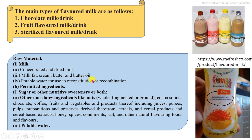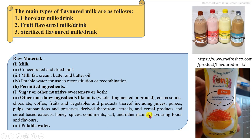The main ingredients used for the production of flavored milk include: first, milk — mostly toned milk, double toned milk, reconstituted milk, or recombined type milk prepared using milk constituents. Second, sugar and sweeteners as per regulations. Third, non-dairy ingredients including nuts, cocoa solids, chocolates, coffee, vegetable juice, puree, paste, pulps, cereals, honey, spices, salt, and natural or artificial flavoring substances.